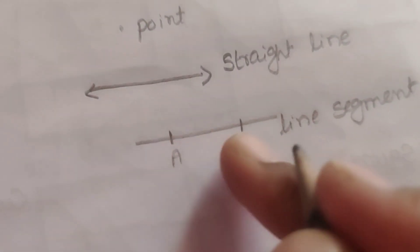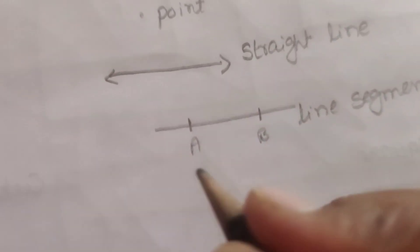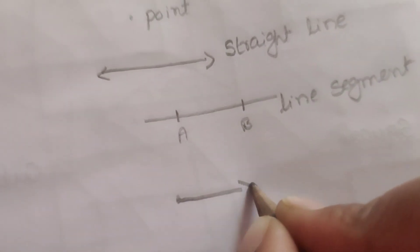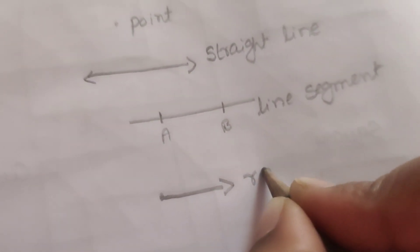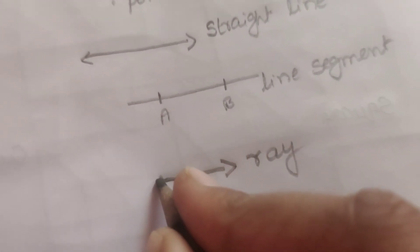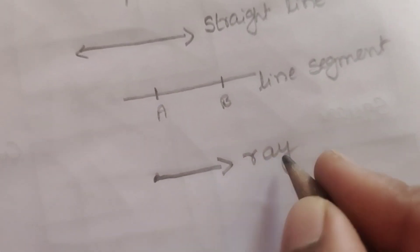What is a ray? It has one starting point and it doesn't have any ending point. So this is called as a ray. The one starting point is there, but it extends to infinity. This is a ray.